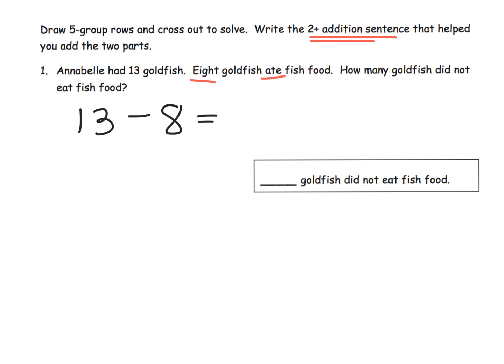And so they're specifically telling us to use the drawing technique. So we are going to create our simulated 10 frame. 1, 2, 3, 4, 5, 6, 7, 8, 9, 10, 11, 12, 13. So there is my simulated 10 frame. And since they told us to use the cross out method, we're going to cross out 8 because it says subtract 8. So there's 5 and 3 down here.